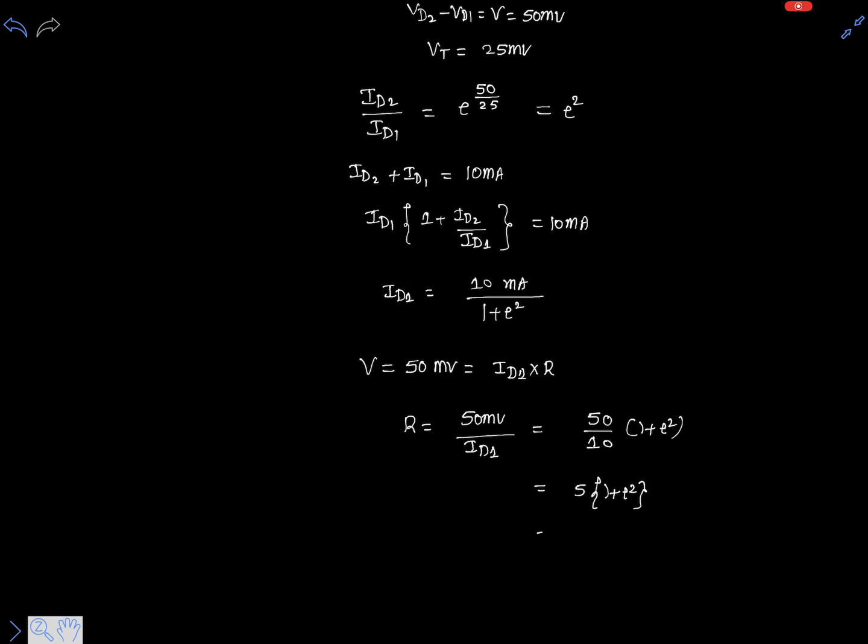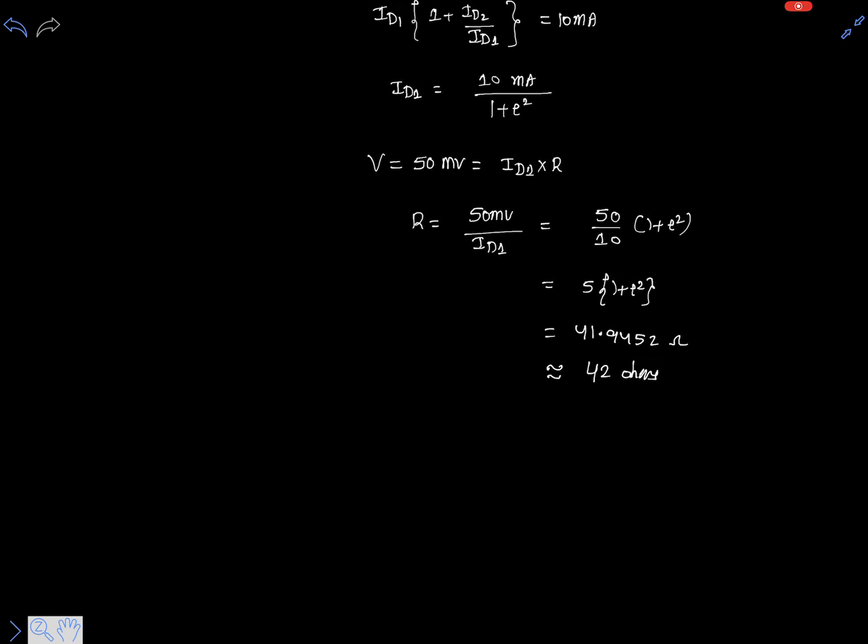So now R is 50 millivolts divided by ID1, so clearly this is nothing but 50 over 10 multiplied with 1 plus e square. This is 5 multiplied with 1 plus e square. Let's use a calculator. 1 plus e to the power 2 will give you around 8.389, when multiplied with 5 which gives you 41.9452 ohms, approximately 42 ohms.